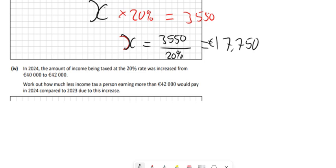Right, so the last part then. So in 2024, it went from 40,000 to 42,000. So that's a 2,000 difference. Then we have to work out how much less income tax a person earning more than that would pay in 2024 compared to 2023. So this is the amount that you can now pay at the 20%. Because up till 2023, you were paying that 2,000 at 40%. But now because the amount has gone up, you can now pay that 2,000 at 20%. So if you were earning 52,000, before 2024, you would have paid 40,000 of it at 20%. But now you can pay 42,000 of it at 20%. So you can pay an extra 2,000 at 20%.